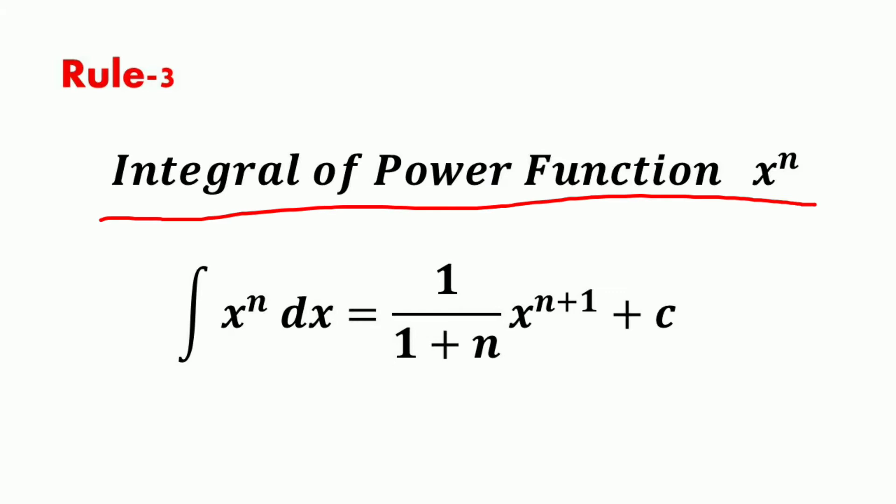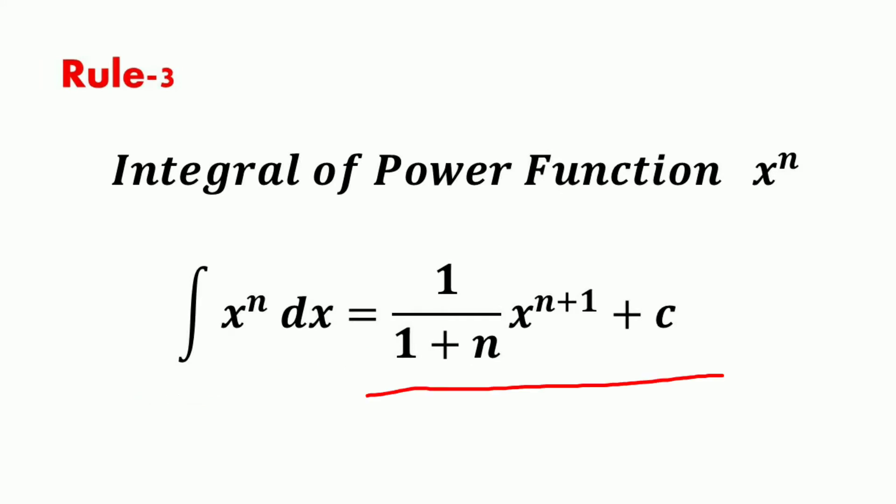So the integral of the power function x raised to the power n — that is, the integral of x^n dx — is equal to (1/(n+1)) · x^(n+1) plus c. This formula applies for any real number n, including fractions or irrational numbers, except when the exponent n equals minus 1, which would give a zero in the denominator.